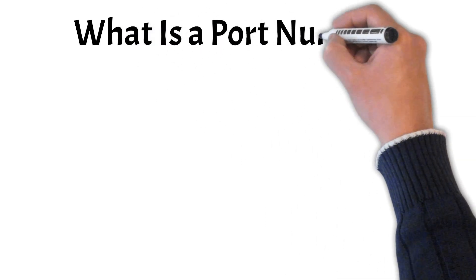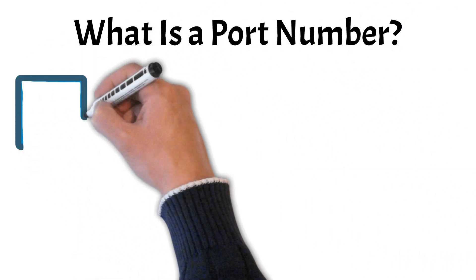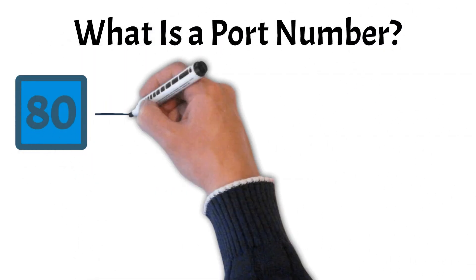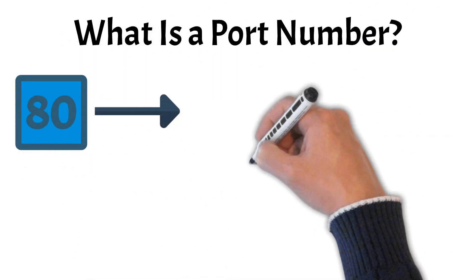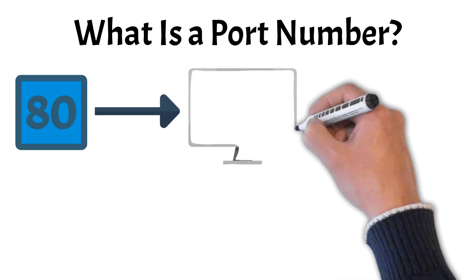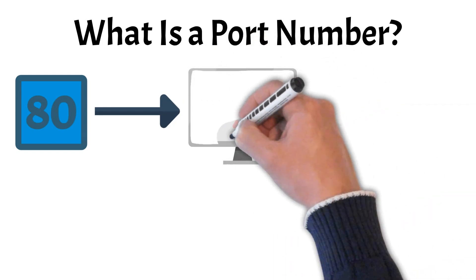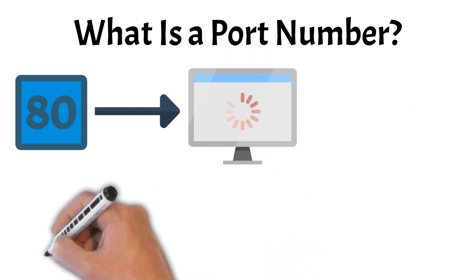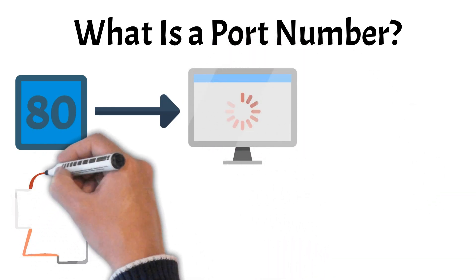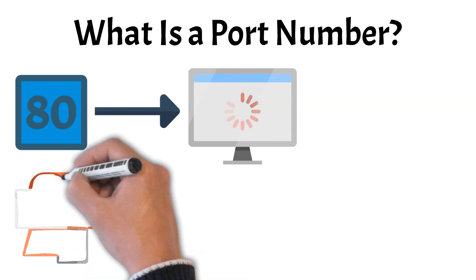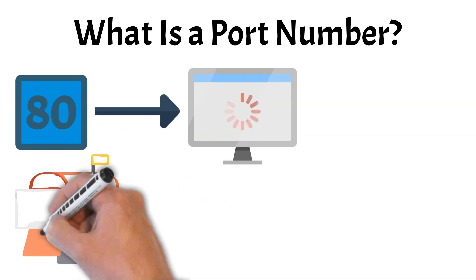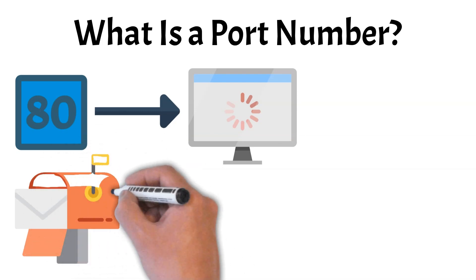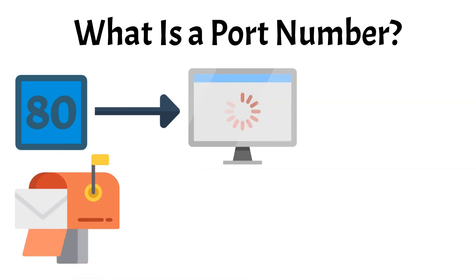A port number is a numerical identifier assigned to specific processes or services on a device, helping computers and servers communicate over a network. Just like a building's address directs mail to the right location, a port number ensures that incoming and outgoing data reaches the correct application.